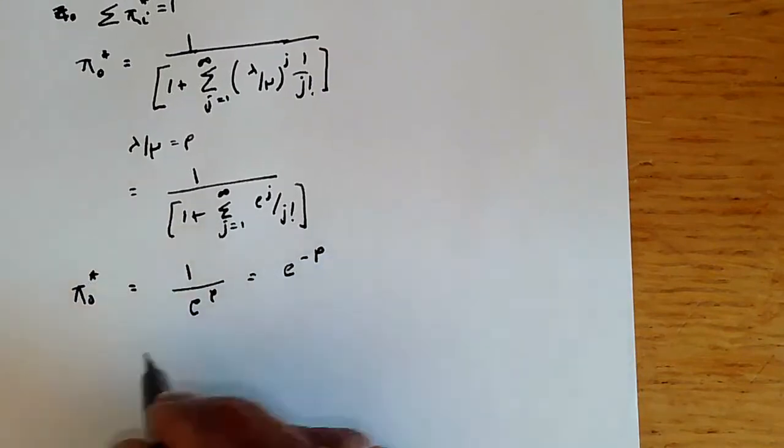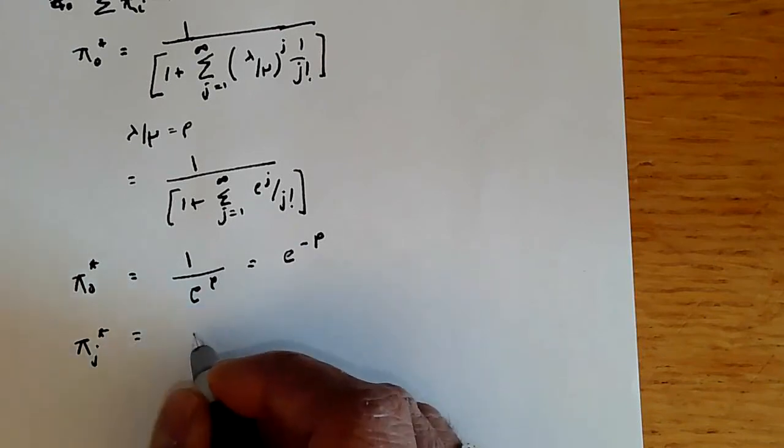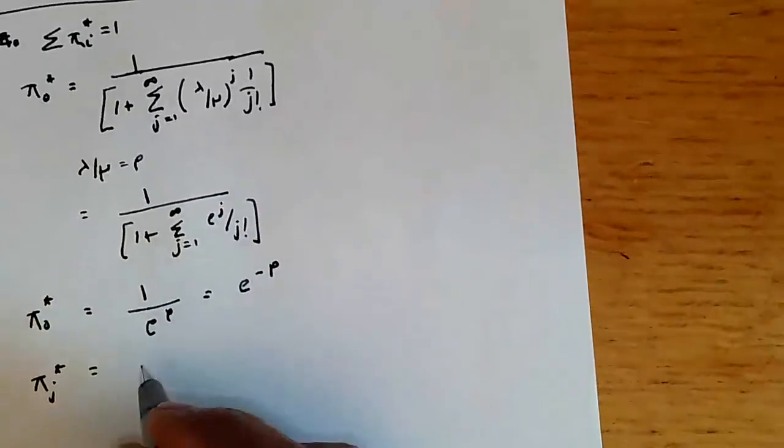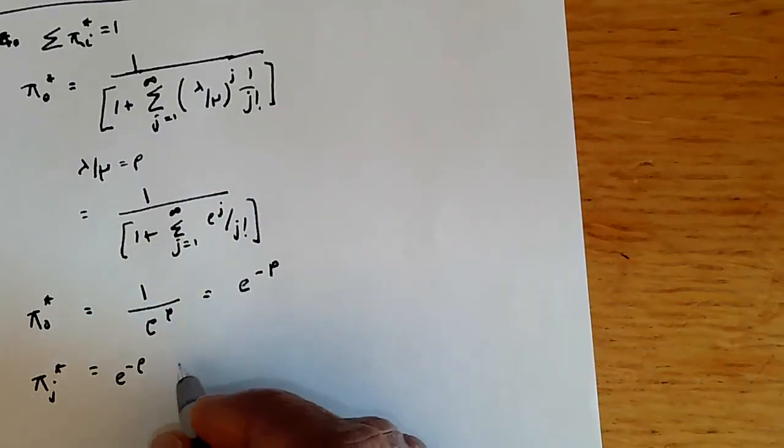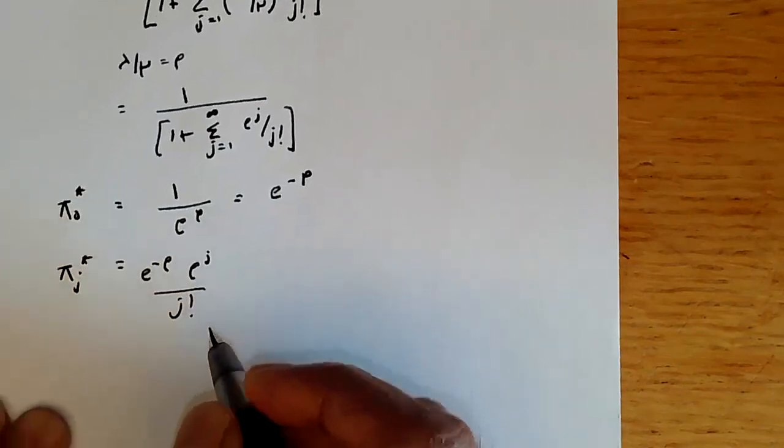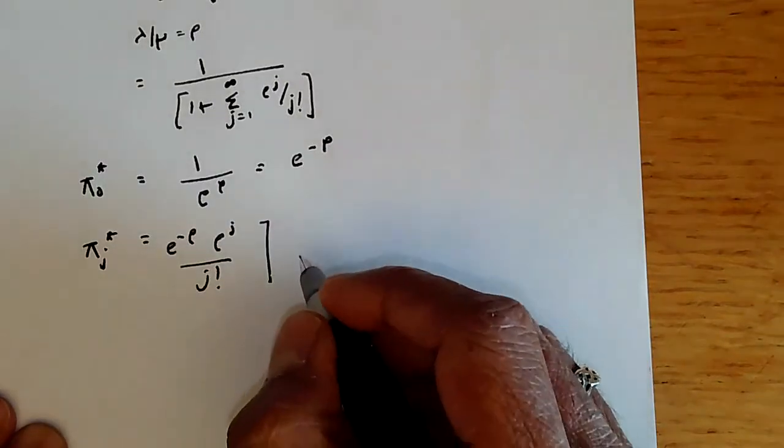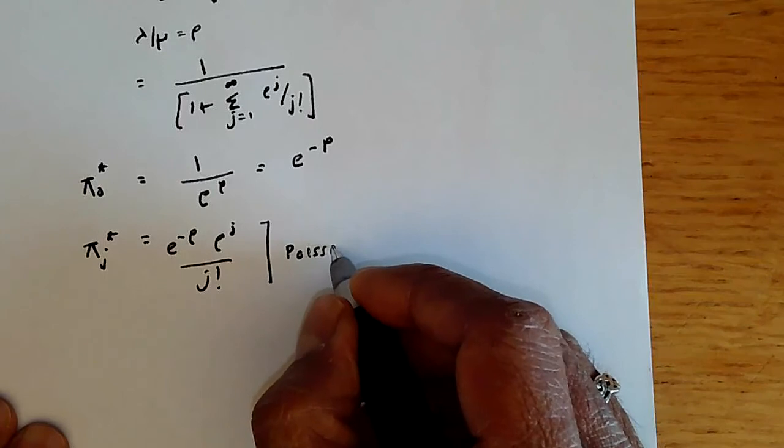And pi j star will be given by, from this equation over here, we get e to the minus rho, rho to the j by j factorial. And this, of course, is just the Poisson distribution.